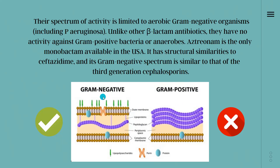Monobactams are only effective against aerobic organisms. The drug available in the USA categorized under monobactam antibiotics is aztreonam — it is the only monobactam available in the USA. It has structural similarities to ceftazidime, which is a third-generation cephalosporin antibiotic, and its gram-negative spectrum is similar to that of third-generation cephalosporins.